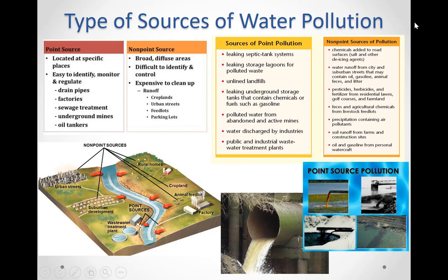Here are examples of point sources and non-point sources of water pollution. It is very important that you spend time understanding each one and why they are point sources or non-point sources. For example, chemicals that get added to road surfaces such as salt or other de-icing agents during winter to melt the ice — this is a non-point source of water pollution.